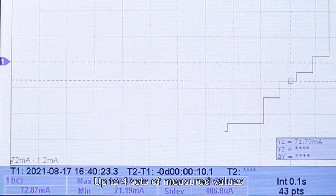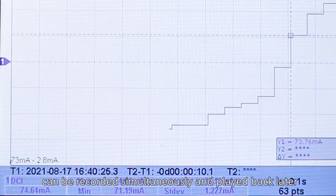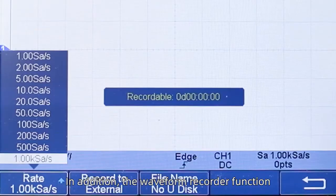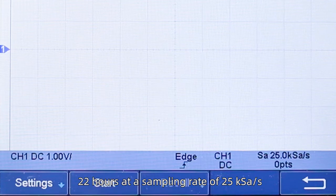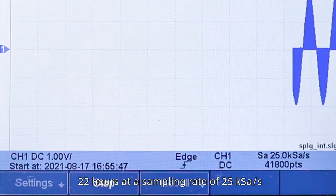Up to four sets of measured values can be recorded simultaneously and played back later. In addition, the waveform recorder function can continuously record waveforms for up to 22 hours at a sampling rate of 25 ks per second.